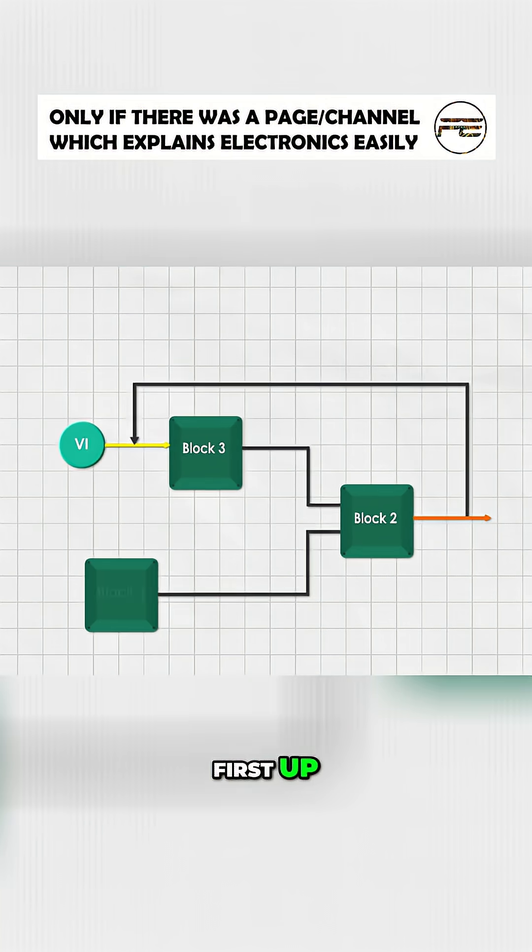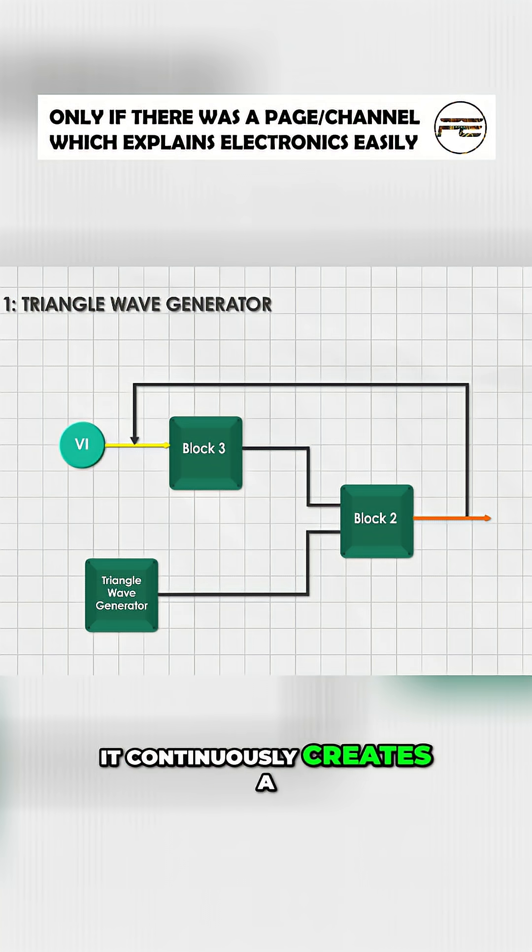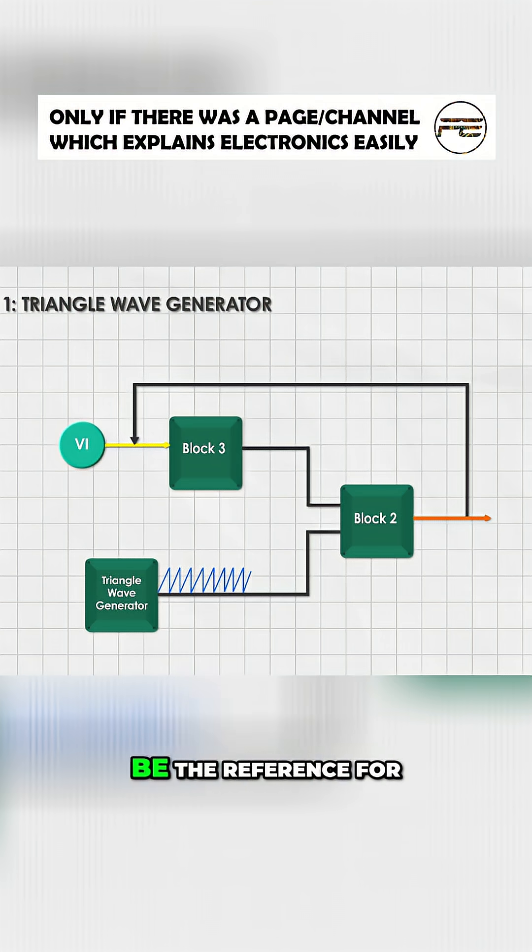First up, the triangular wave generator. Think of this as the heartbeat of the whole system. It continuously creates a voltage that rises and falls. Basically, a triangular wave. And this wave will be the reference for creating a PWM signal.